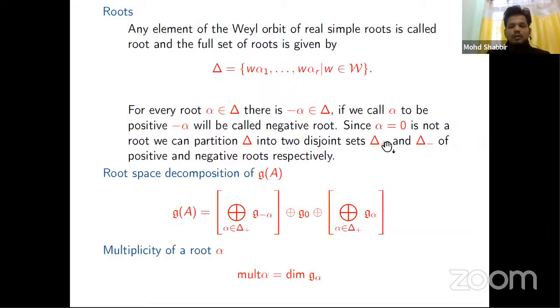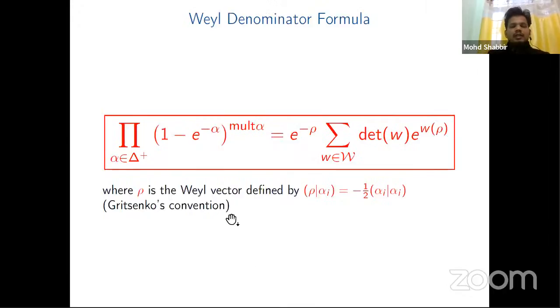For every root α, there's a -α also a root. And α not being α = 0 and not being a root means we can always partition into two disjoint sets: one is called the positive roots and the other one is the negative roots. Further, we can decompose the real Lie algebra into a triangular decomposition. The dimension of all these g_α is called the multiplicity of α.